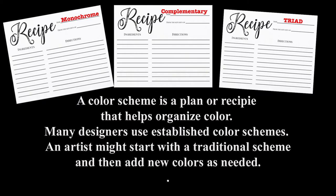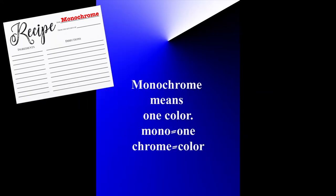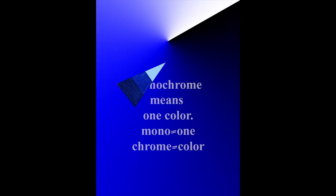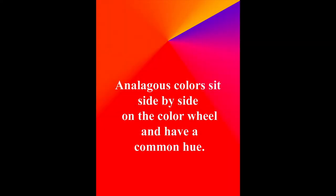A color scheme is a plan or recipe that helps organize color. Many designers use established color schemes, while an artist might modify the color scheme as needed. The simplest color scheme is monochrome, which means one color. To paint with monochrome, only use one wedge of the color wheel.